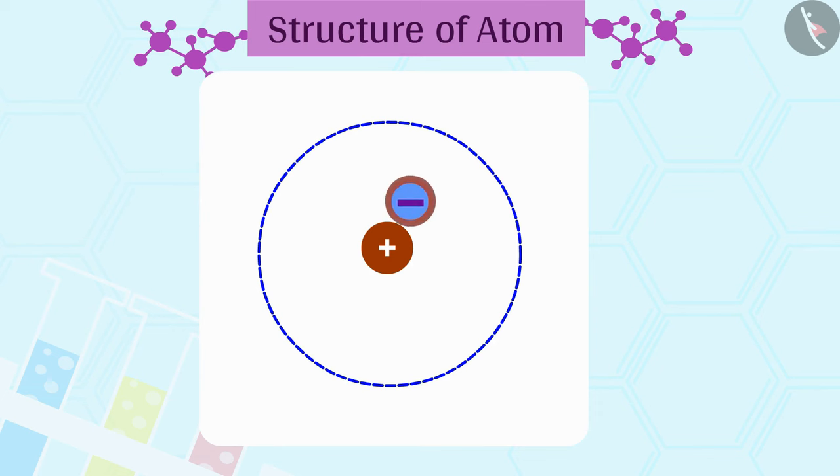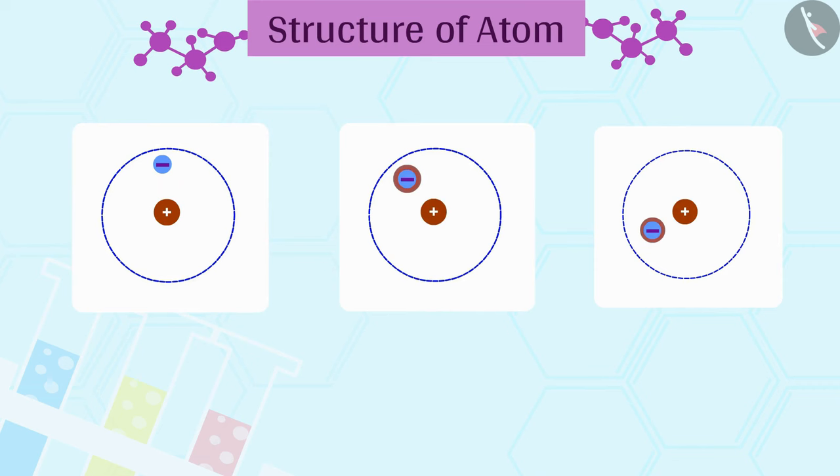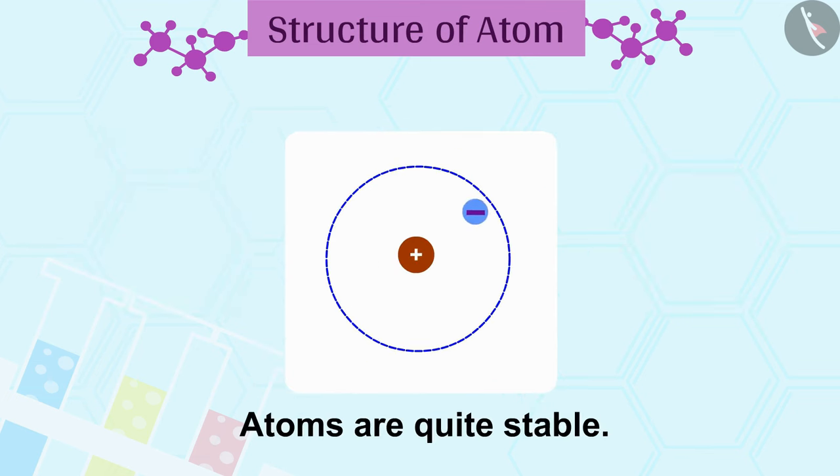Thus the revolving electron would lose energy and finally fall into the nucleus. If this were so, the atom should be highly unstable and hence matter would not exist in the form that we know. We know that atoms are quite stable.